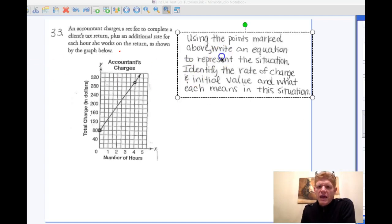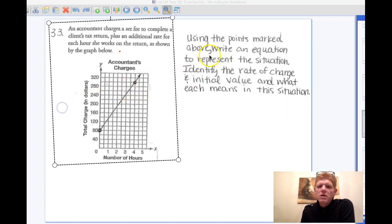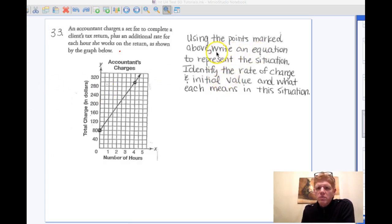Okay, number three gives us several tasks. We're going to use the points marked to write an equation to represent the situation. We're going to identify the rate of change and the initial value and what each means in this situation.